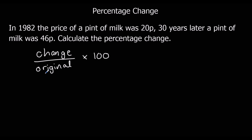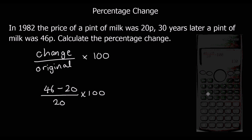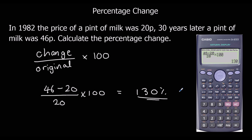The change is the current price take away the original price. So 46 minus 20, over the original 20, times 100. We just type that into the calculator and we get 130, so the percentage change is 130%.